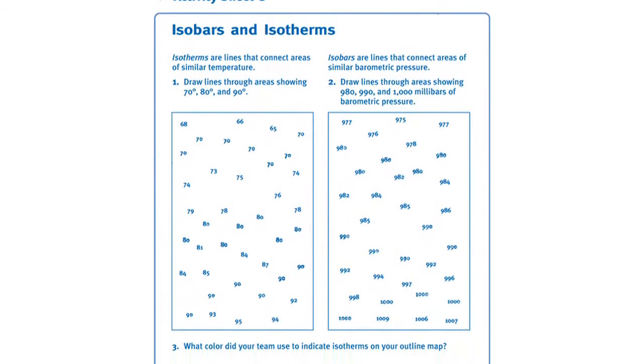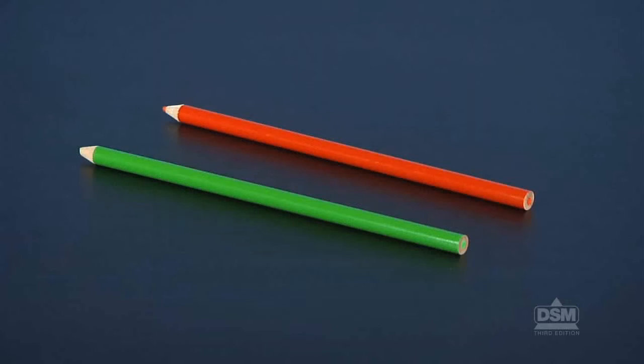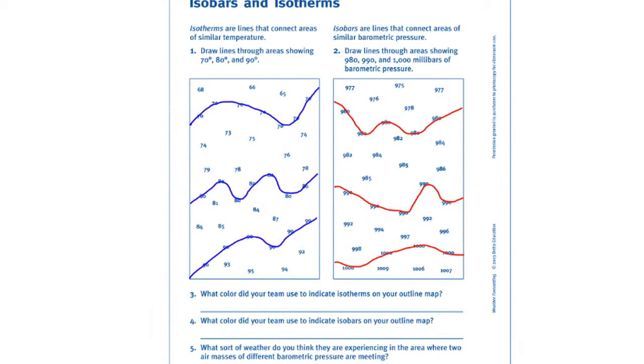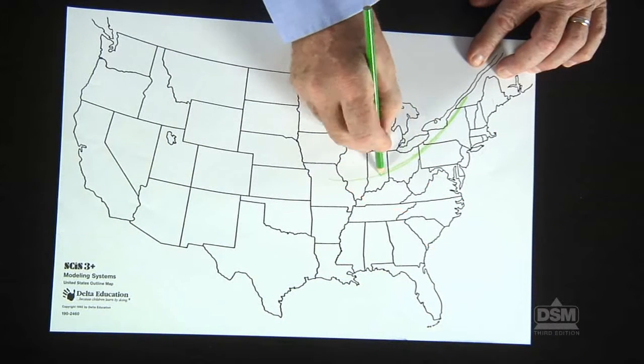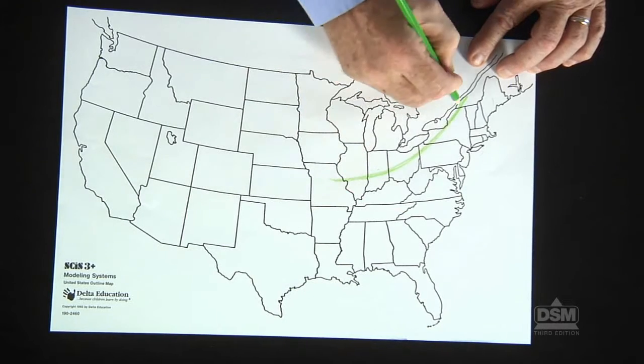Distribute Activity Sheet 8 to each student and two different colored pencils to each team. Have students complete the activity sheet. Then, instruct the teams to use one colored pencil to draw isotherms from the latest weather report on their U.S. outline map.